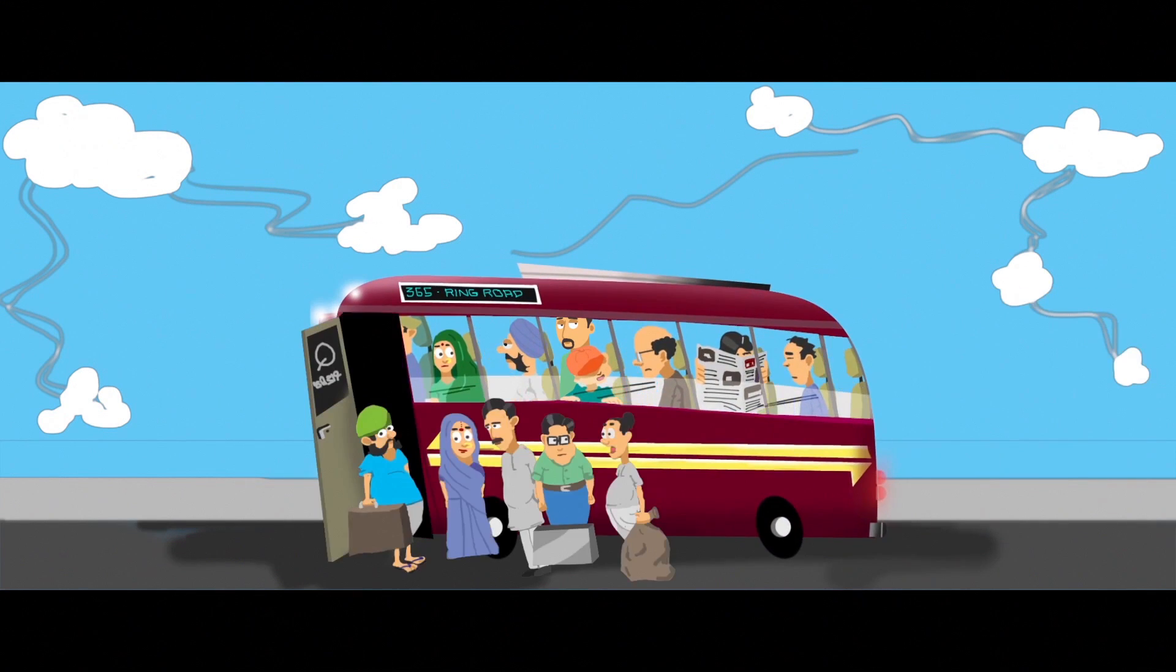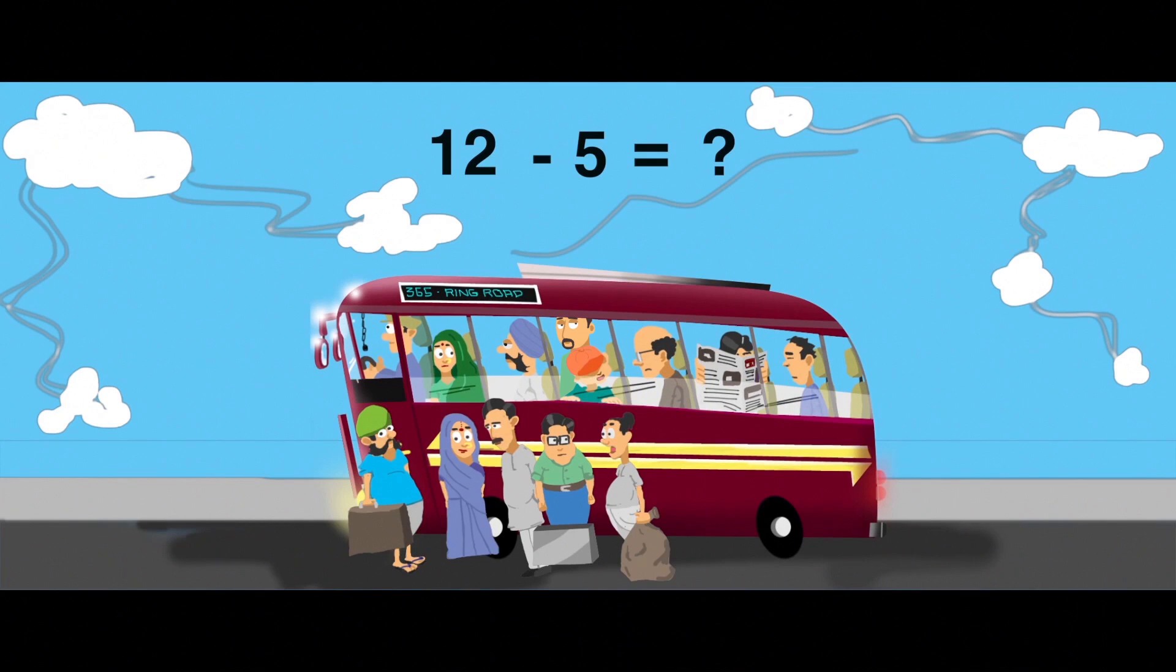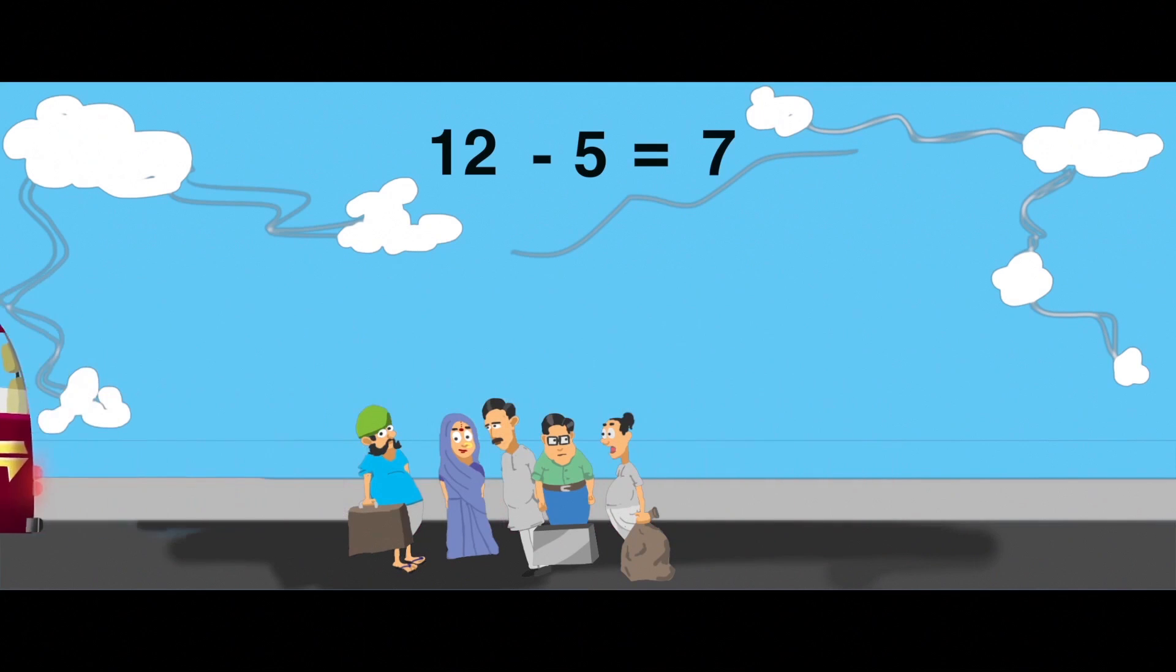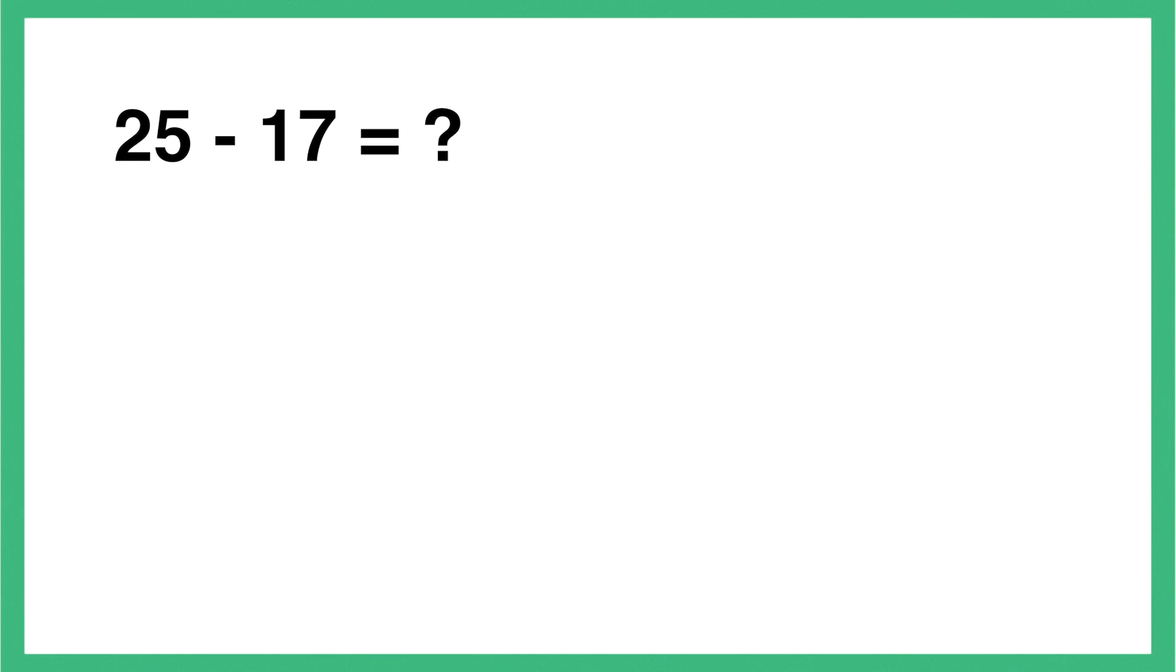If there are 12 people in a bus and 5 of them get off at the first stop, how many remain in the bus? Students will immediately see the application of the rules as they solve a real-life problem and work out that the answer is 7.